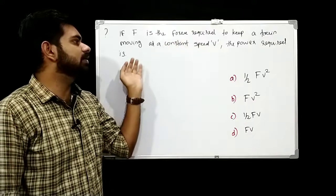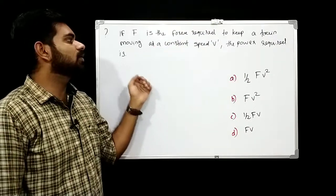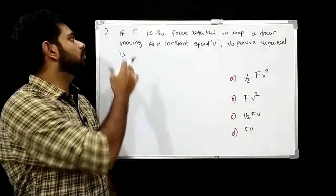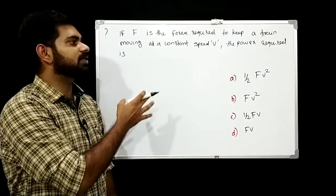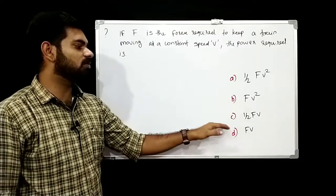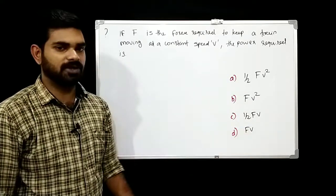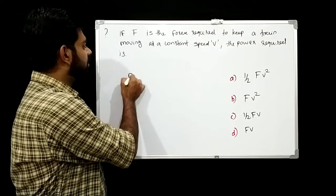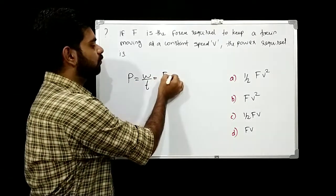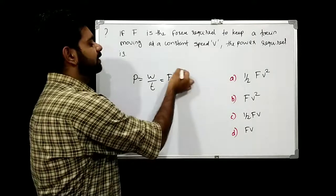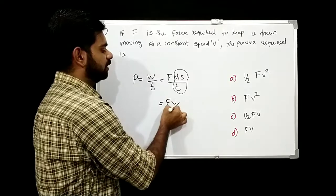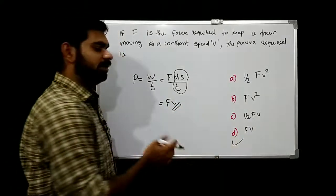The power required is — option A: ½FV², option B: FV², option C: ½FV, option D: FV. Power P = work/time. Work = F·ds, so P = F·(ds/dt) = F·V. Therefore the answer is option D: FV.